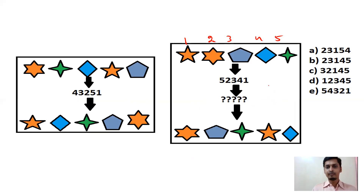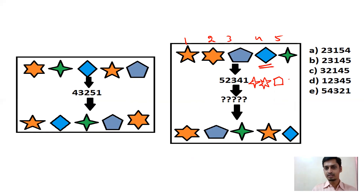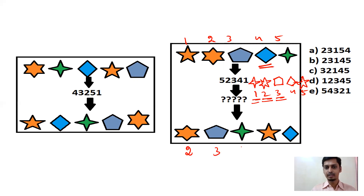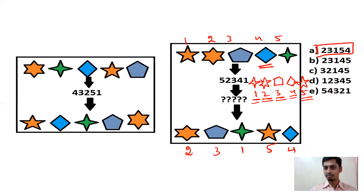Write 1, 2, 3, 4, 5. The arrangement is 5, 2, 3, 4, 1: star (5), six-sided star (2), pentagon (3), rhombus (4), five-pointed star (1). Write 1–5 over the answer symbols: six-sided star is 2, pentagon is 3, four-sided star is 1, five-sided star is 5, rhombus is 4. Answer is 2, 3, 1, 5, 4 — option A.